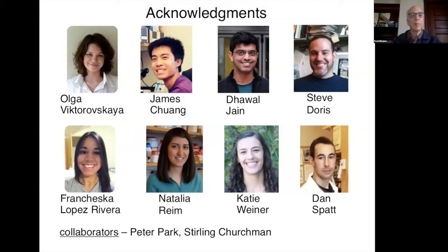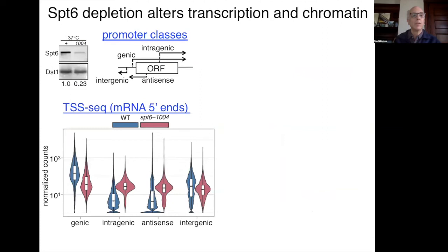Let me start with a brief recap about what we know about the role of SPT6. We studied SPT6 by depleting the protein using a temperature-sensitive allele, spt6-1004, and here's a western showing the degree of depletion after shifting cells to 37°C. When we analyzed transcription after that depletion, we defined effects over four classes of promoters: genic, intragenic (sense strand within the ORF), antisense intragenic, and intergenic transcription.